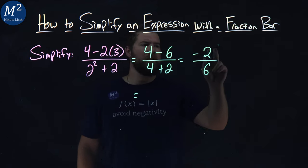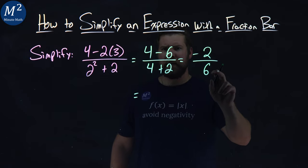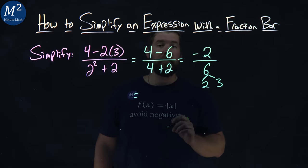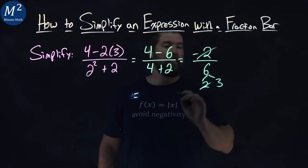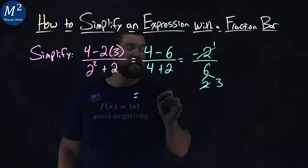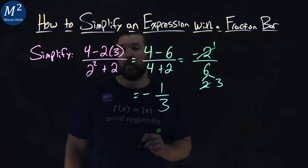From there, negative 2 divided by 6. How does that simplify out to be? Well, 6 is 2 times 3, right? So we can cancel out the 2s there. We're left with 1 up top, and so negative 2 over 6 is negative 1 over 3.